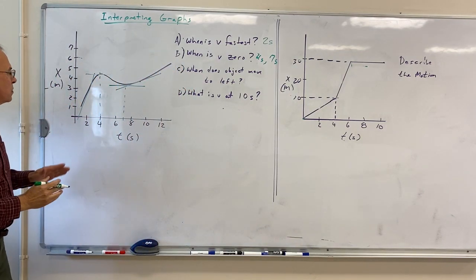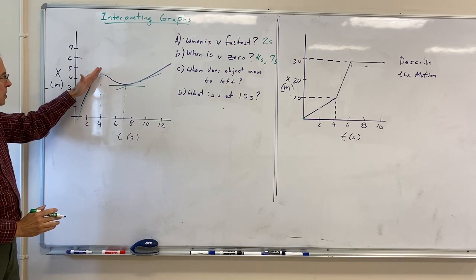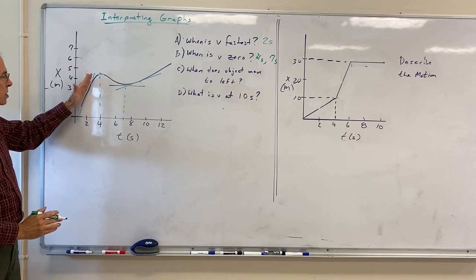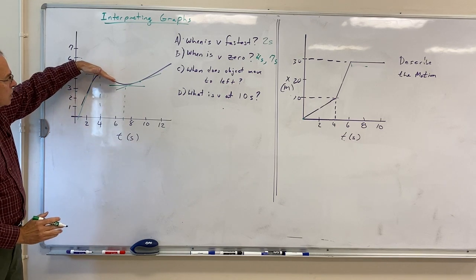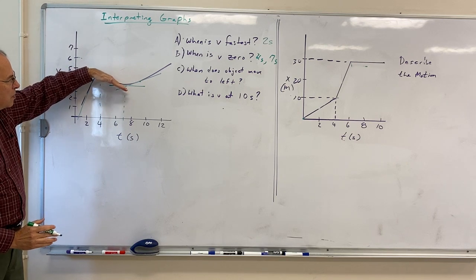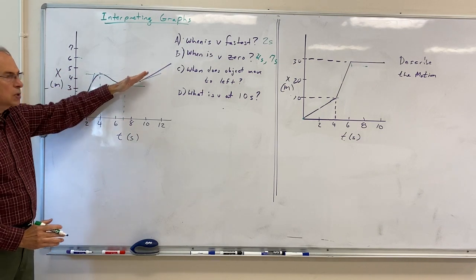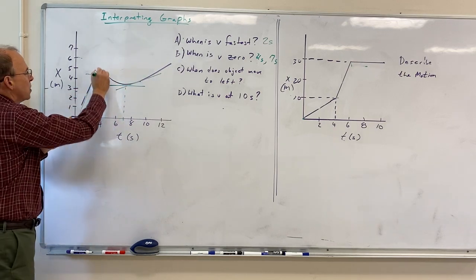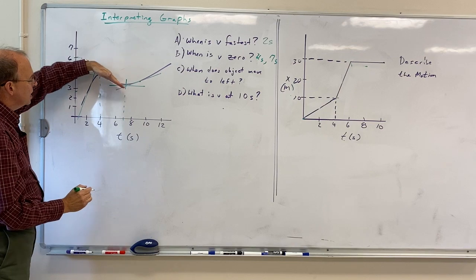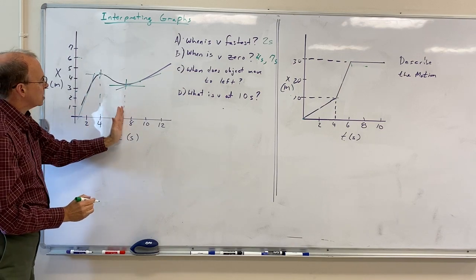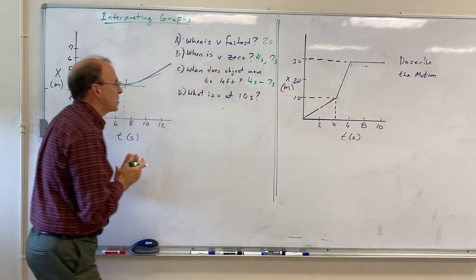When does the object move to the left? When the slope is positive, that means a positive velocity, so in this region the particle is moving to the right. This region the slope is negative — that means the object is moving to the left — and this region it's moving to the right again because the slope is positive. So between four seconds and around seven seconds, the object would be moving to the left.